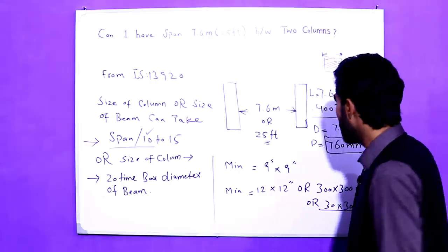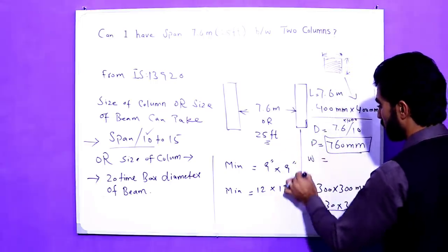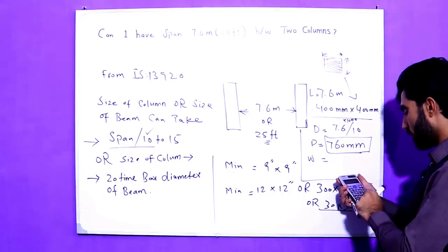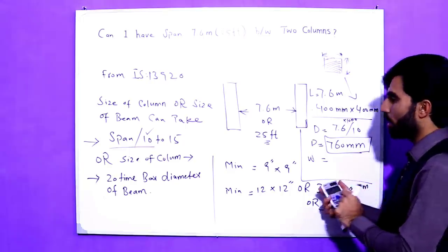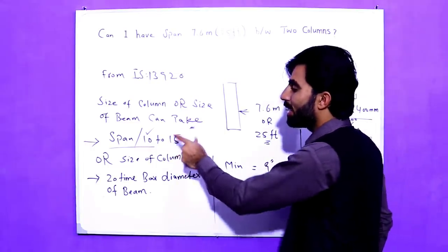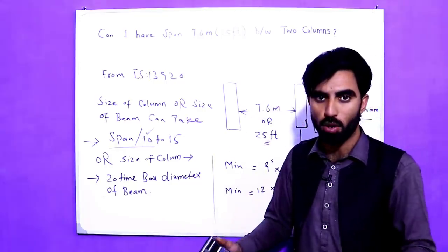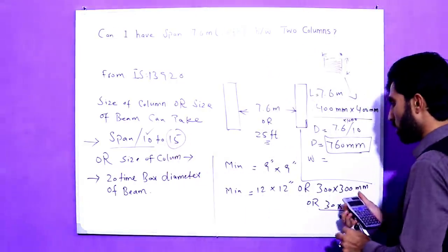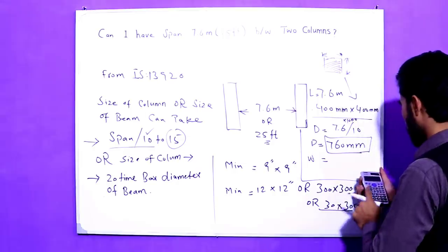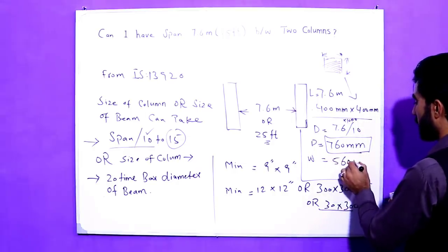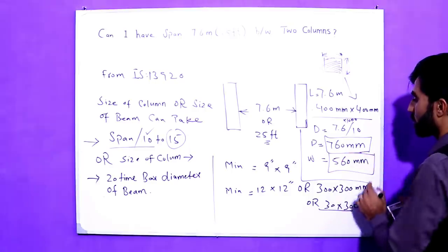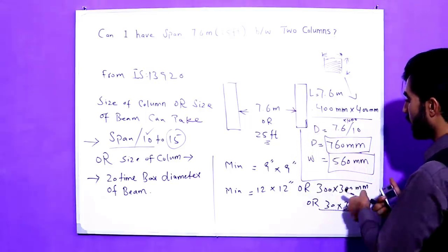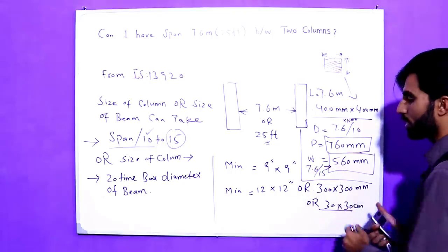For the width of the beam: 7.6 multiplied by 1000 divided by 15 — because the width should be less than the depth in the case of a beam. You can take 14 or 15; take the maximum number, so divide by 15. This gives 560 mm. So the width of the beam should be 560 millimeters. The depth formula uses division by 10 and the width formula uses division by 15.